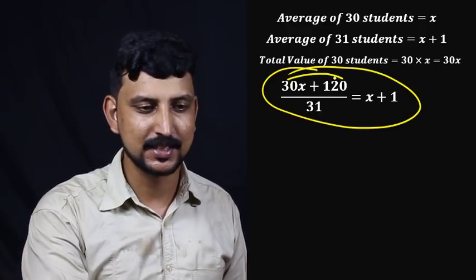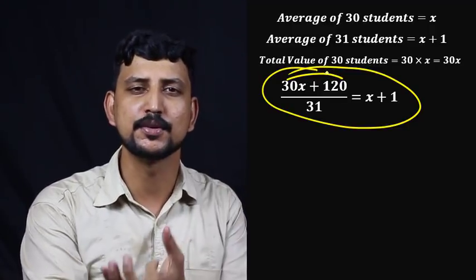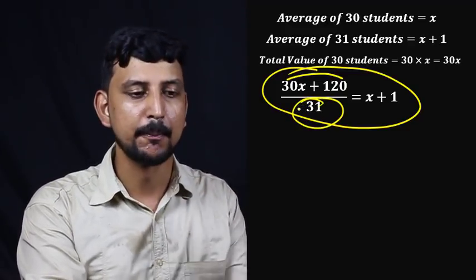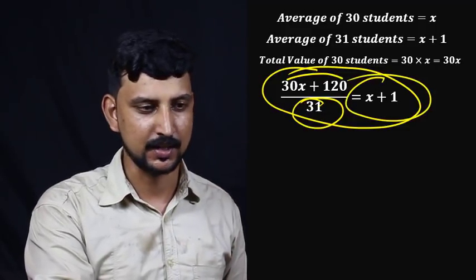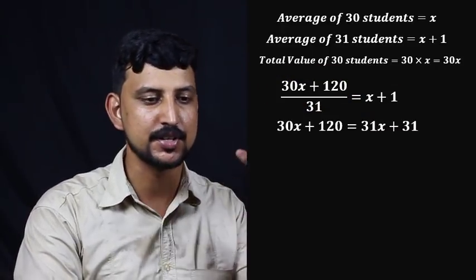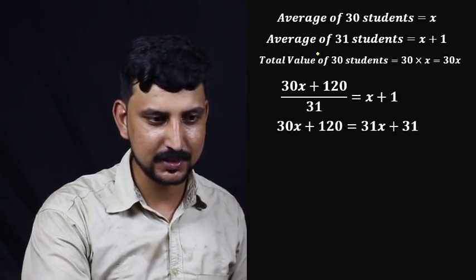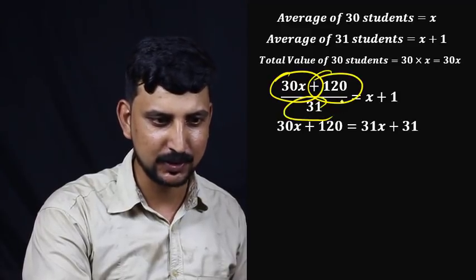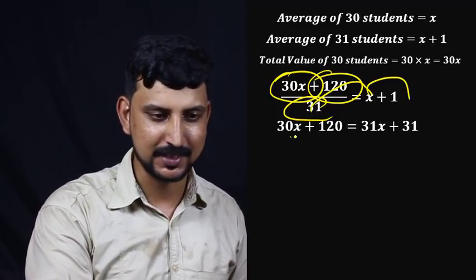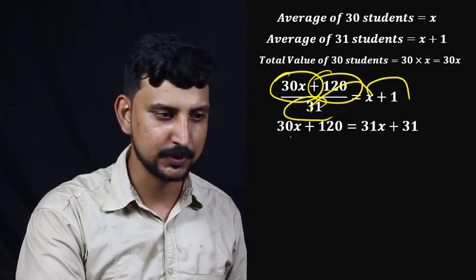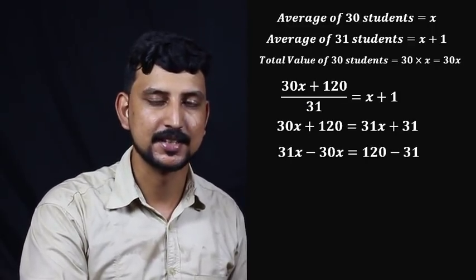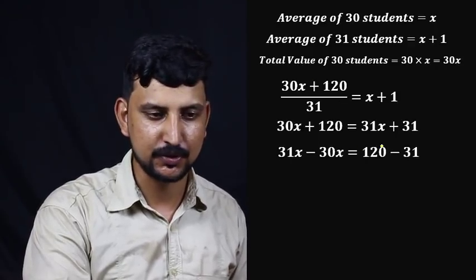Let's get 30x plus 120. That is common in that equation. So 30x plus 120 equals 31 times x plus 1. That gives us 30x plus 120 equals 31x plus 31. In our equation, 31x minus 30x equals 120 minus 31.